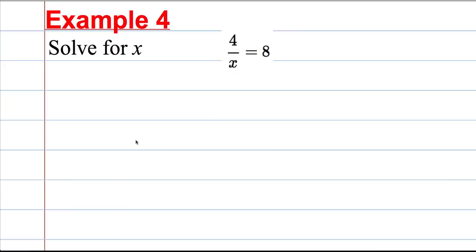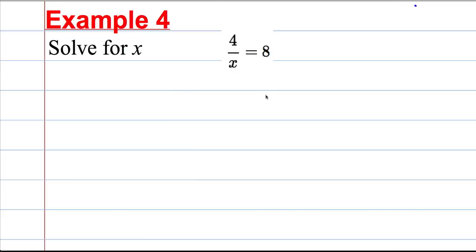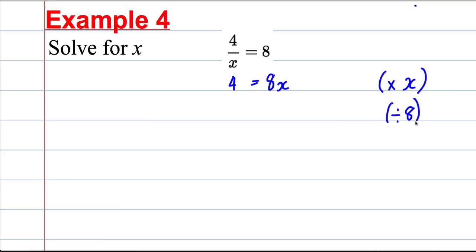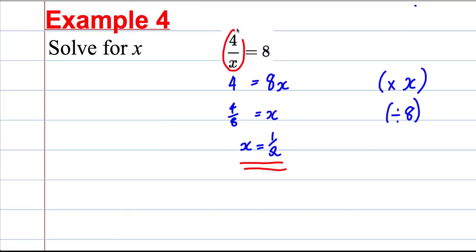Example 4: 4 divided by X equals 8. The X is on the denominator, so multiply both sides by X to get 4 = 8X. Divide both sides by 8: X = 4/8 = one half. Check: 4 divided by one half equals 8, because there are 8 halves in 4. Correct.